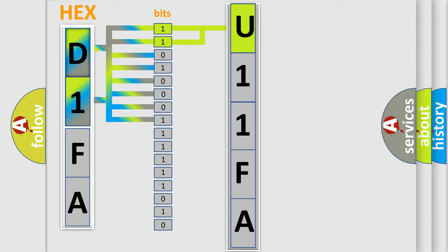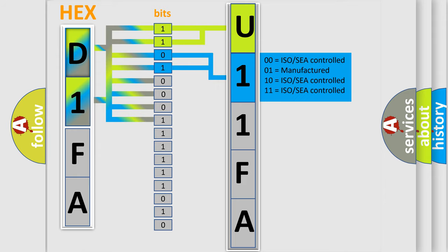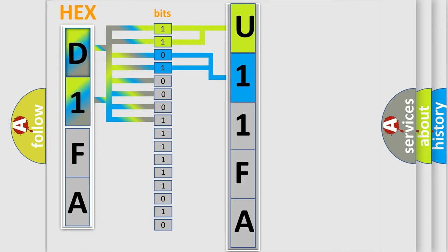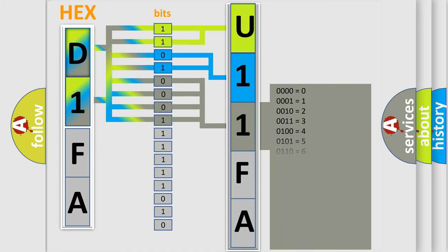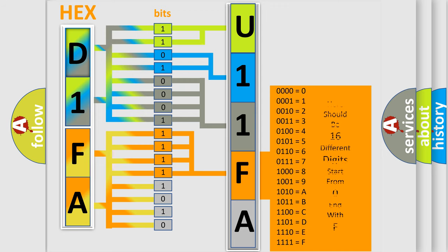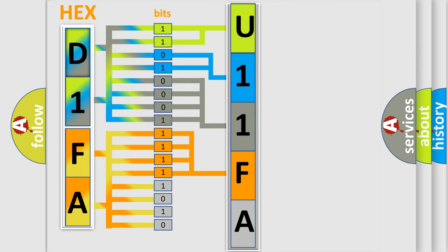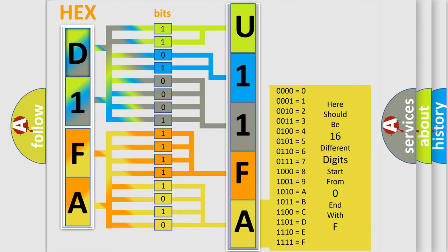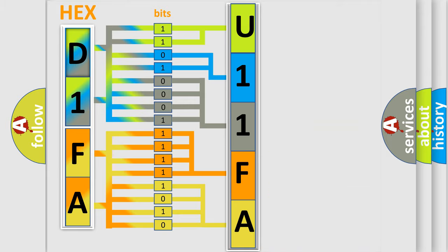The next two bits determine the second character. The last bits of the first byte define the third character of the code. The second byte is composed of a combination of eight bits. The first four bits determine the fourth character of the code, and the combination of the last four bits defines the fifth character. A single byte conceals 256 possible combinations.